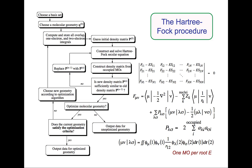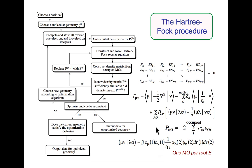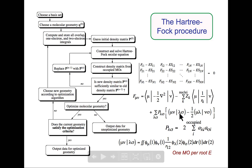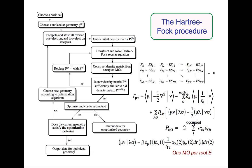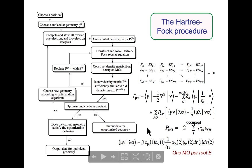In semi-empirical theory, we had a series of approximations ranging from very extreme—like the complete neglect of differential overlap, which gets rid of almost all two-electron integrals—to NDDO, neglect of diatomic differential overlap, which saved many of them. But I want to ask: what if I really want to evaluate all of these integrals? Here's the two-electron, sometimes called four-index, integral—because it runs over four different basis functions—how might I go about actually computing that?